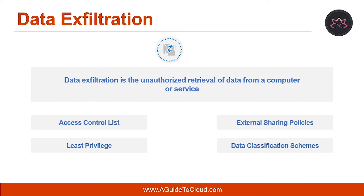Another key strategy is to set up and use data classification metadata, particularly with data shared on SharePoint sites and OneDrive. This requires determining a set of risk tiers such as high business impact, medium business impact, or low business impact, and then requiring sites and documents to tag data with the appropriate classification. Finally, data loss prevention — or DLP — policies in Microsoft 365 enable you to configure rules about how to handle data moving in and out of your tenant, preventing sensitive content from being emailed to external parties or users from sending social security numbers in emails.